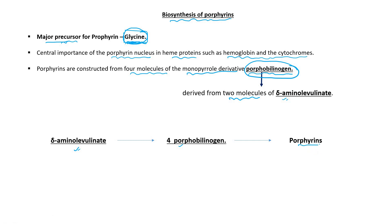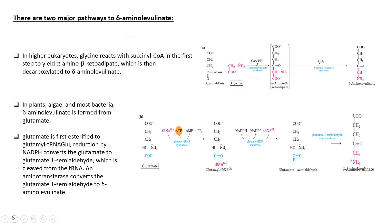The big question is: how is delta-aminolevulinate formed? For the synthesis of delta-aminolevulinate, there are two major pathways. In one pathway, glycine is used as a precursor; in the second pathway, glutamate is used as a precursor.